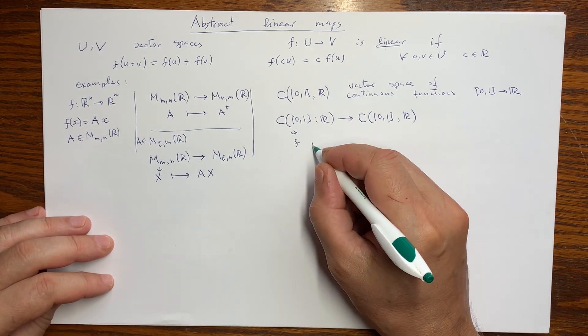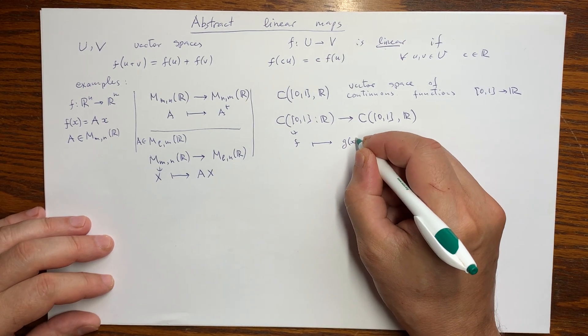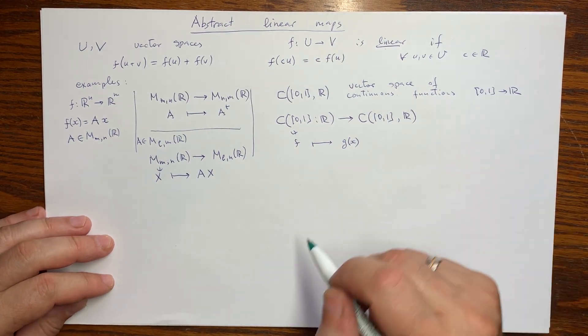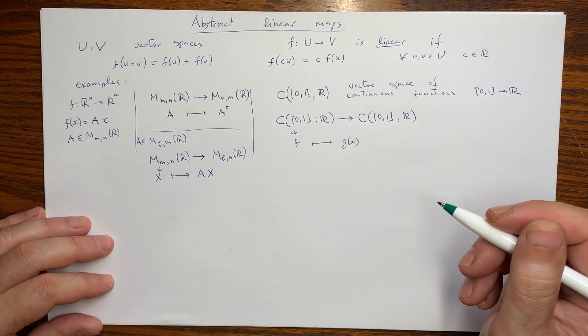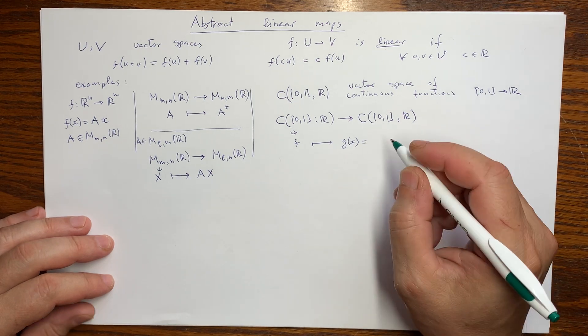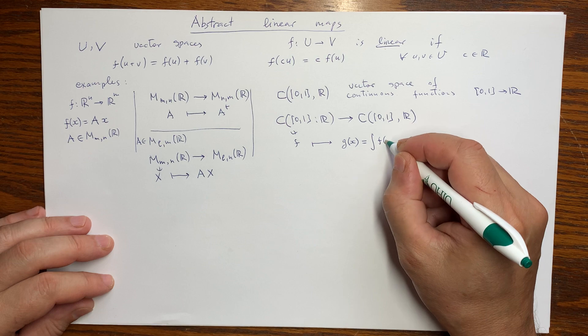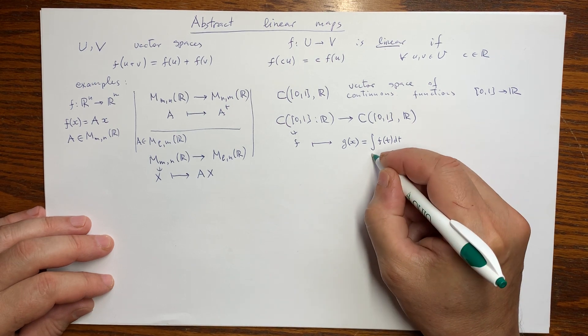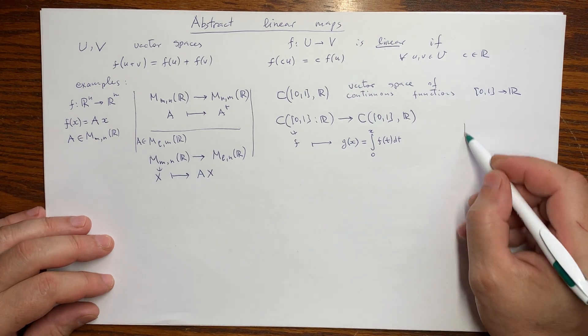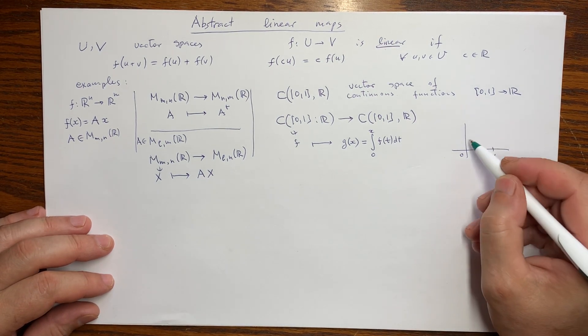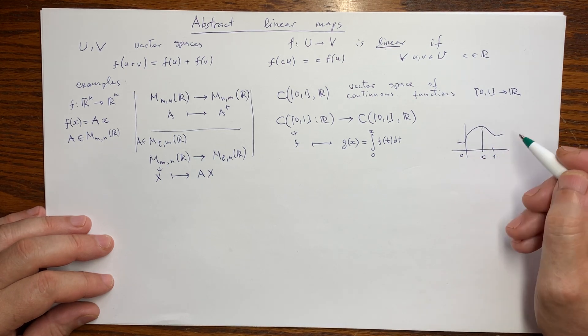So if we have a continuous function, what we can do, what this map will do, it will replace a different continuous function. Continuous function on an interval. So at any point of the interval, I should be able to give the value. And the value is the integral of the original function with limits 0 and x. So graphically that is the area under the curve computed up to x.